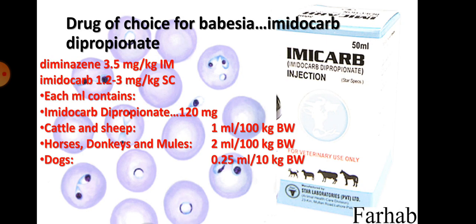The drug of choice for babesiosis (red water) is imidocarb dipropionate; diminazine is also used. Imidocarb dipropionate is available as Imicarb, with 120 mg/mL. The dose ranges from 0.25 to 2 mL: 0.25 mL per 10 kg for dogs, 1 mL per 100 kg for cattle and sheep, and 2 mL per 100 kg for equines. The standard dose is 1.2 to 3 mg, or on average 2 mg/kg subcutaneously.